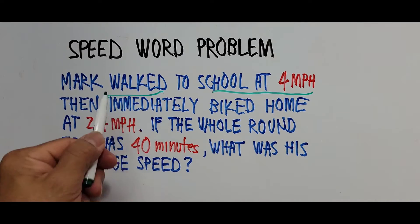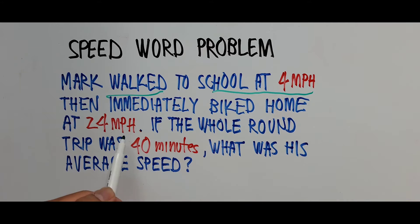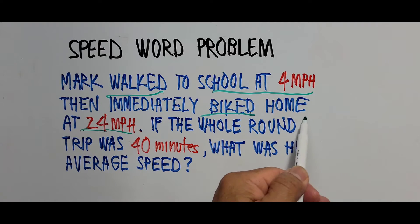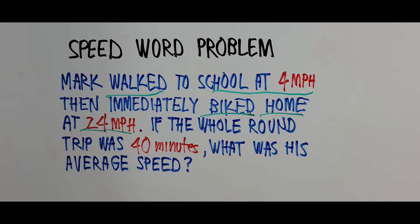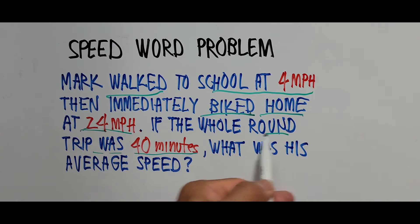Mark walked to school at 4 miles an hour. For whatever reason, he needed to go back home immediately. The speed biking home was 24 miles an hour. He wasted no time — after realizing he had to go back, he grabbed a bike and started biking home at 24 miles an hour. The whole round trip was 40 minutes.